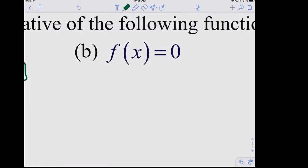For f(x) = 0: the derivative of f(x) is f prime of x, and the derivative of zero is zero. Zero is actually its own derivative. What does y = 0 look like? The x-axis. And its derivative would also be the x-axis — slope zero everywhere. Interestingly, zero is its own derivative. I wonder if there's anything else that's its own derivative.